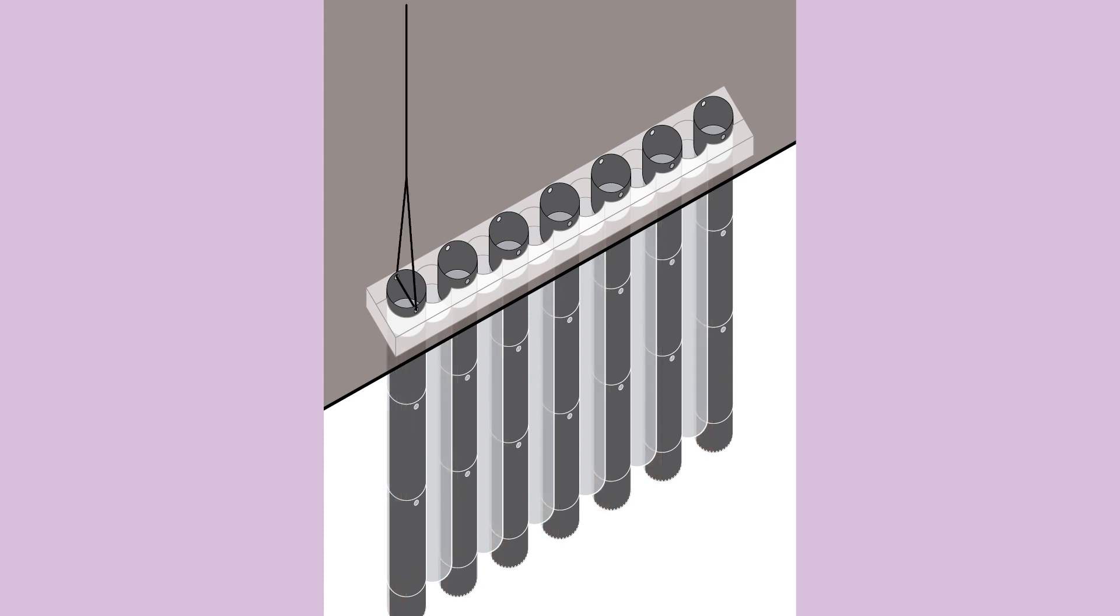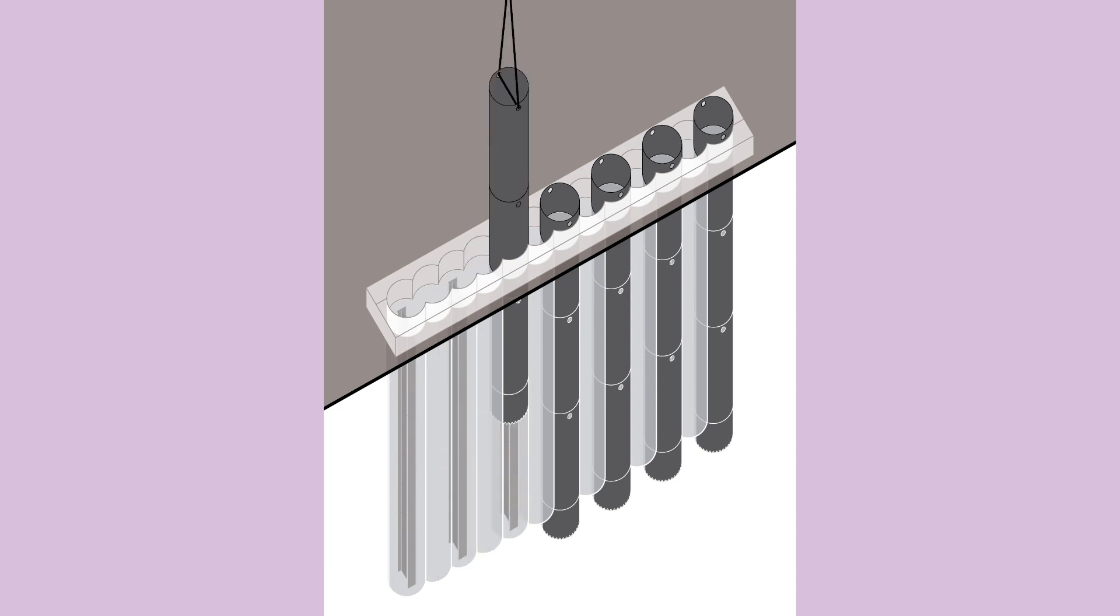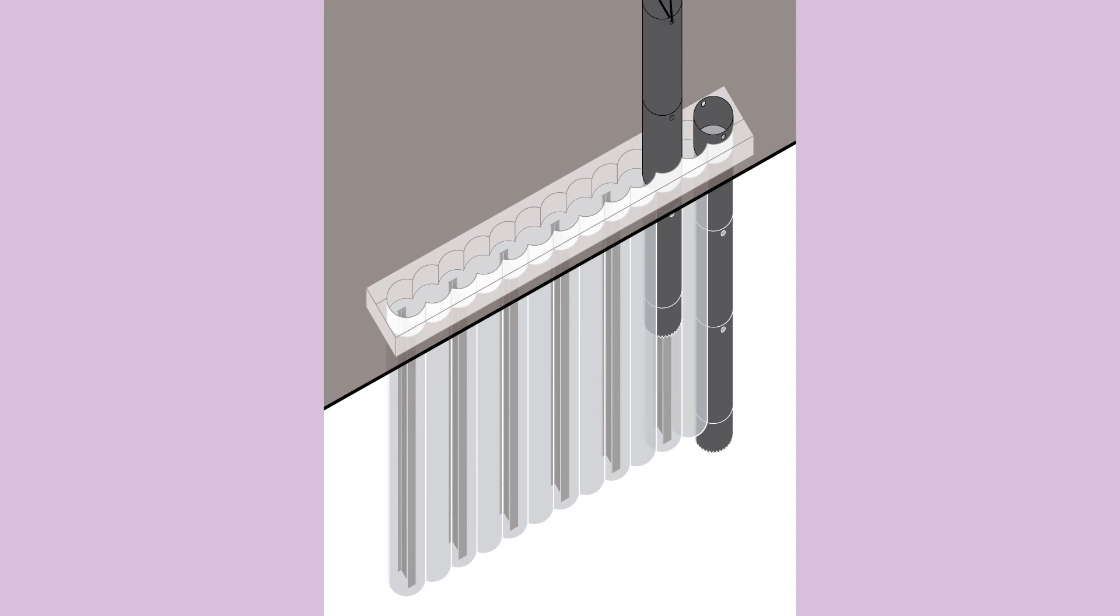Next, the steel casings are removed, and the secondary pile concrete is allowed to set. Together with the primary piles, they form a continuous, watertight retaining wall.